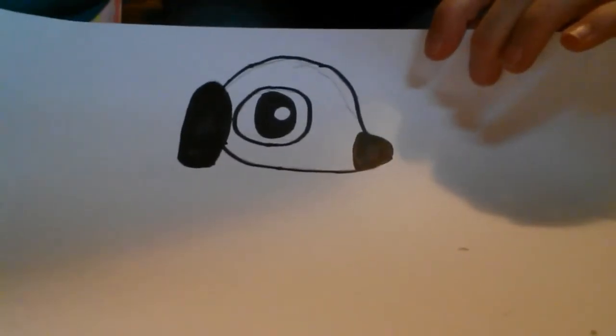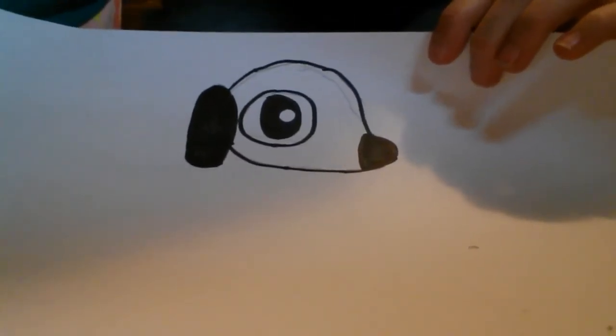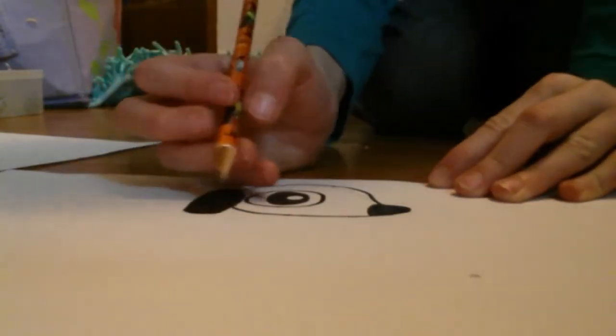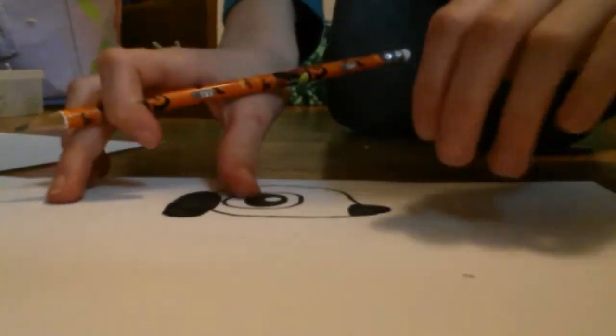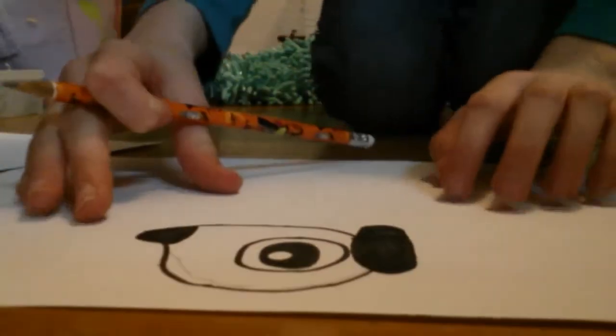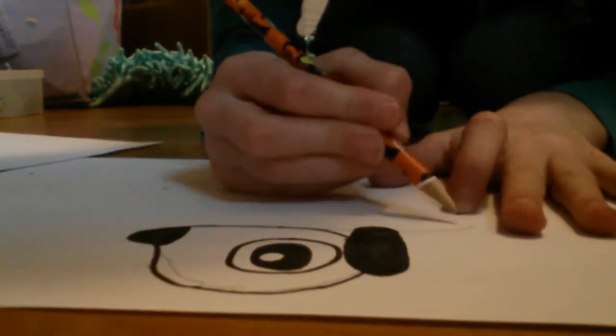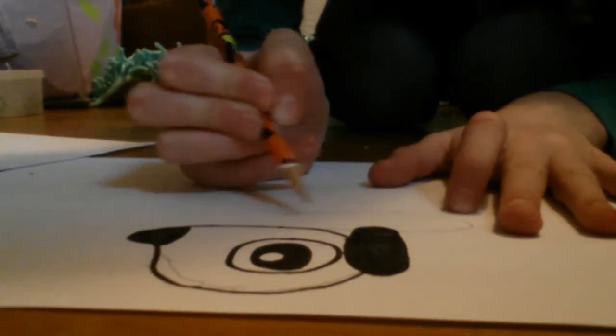We're nearly finished. Now we just draw on the body. The body is mostly an oval. What you're going to do is simply draw an oval starting from the bottom of the head.